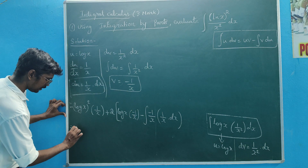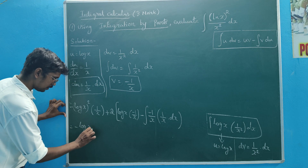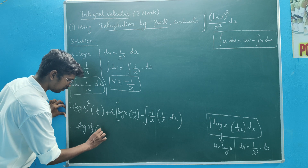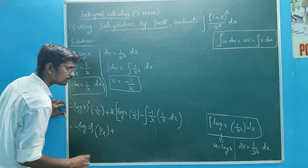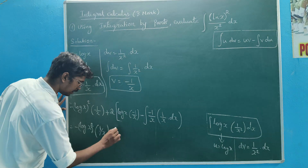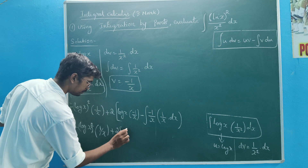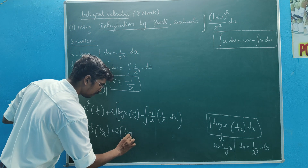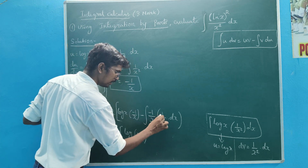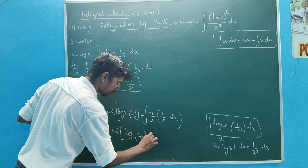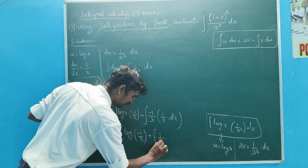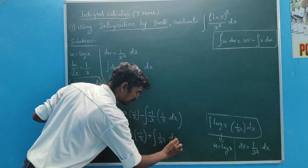Minus. Here is equal to: minus log x whole square minus into 1 by x. This step is where we are — multiply by 2. 2 of log of minus 1 by x, log of minus 1 by x. Minus into 1 plus 0. 1 by x is 1 by x. So 1 by x square into dx.